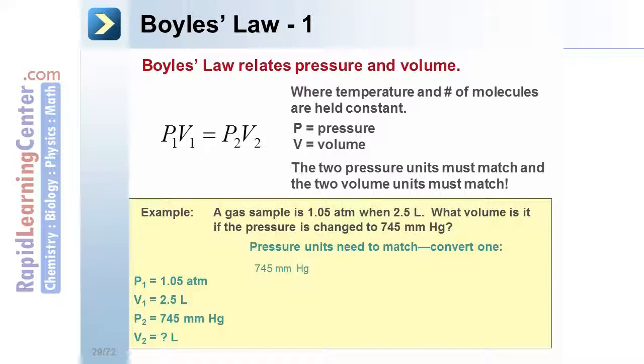It doesn't matter which one you convert, you just need to make them match. Let's convert 745 millimeter mercury to atm. Arrange the ratio so that millimeter mercury cancels and results in atm. 745 millimeter mercury is the same as 0.980 atm.